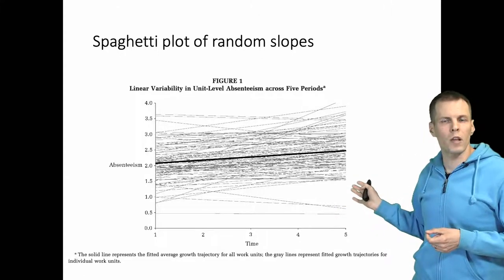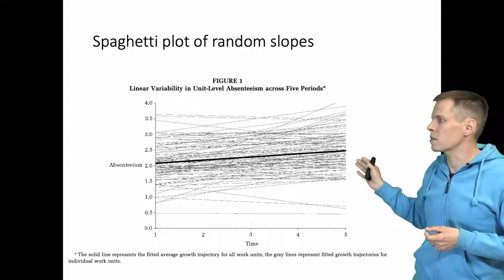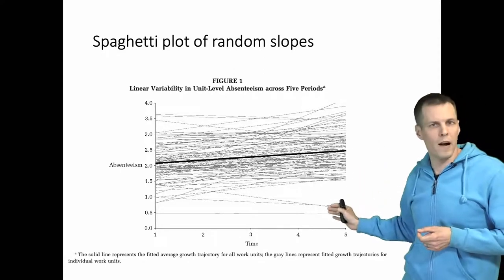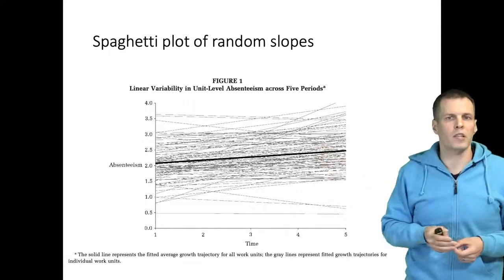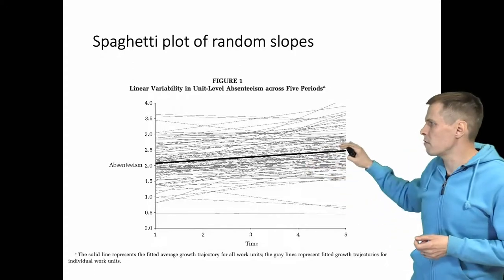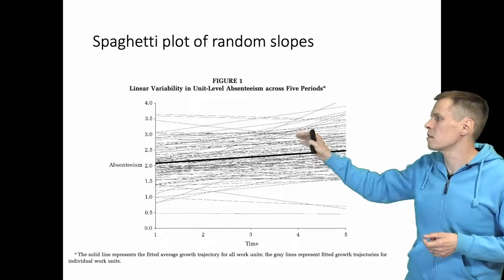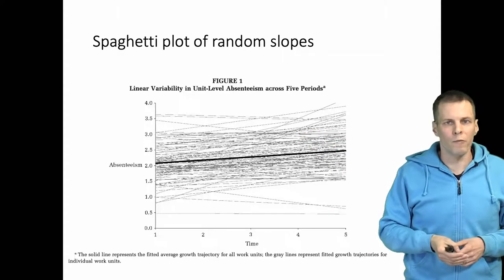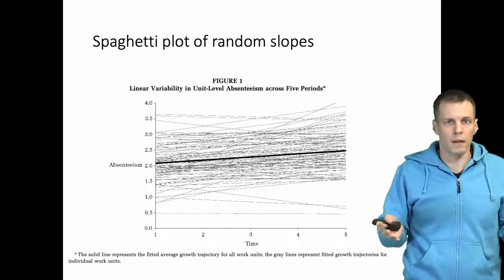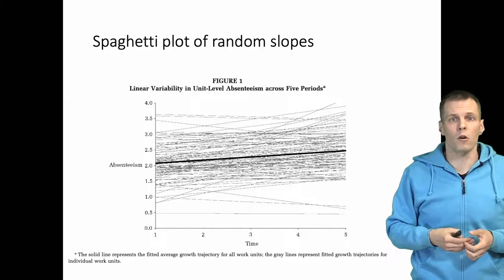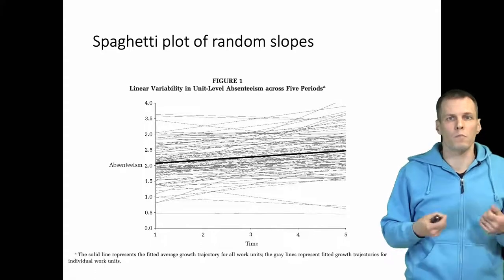We can see that all the lines go roughly in the same direction, but there is some variation and extremes. Generally they all trend in the same direction. There is some difference but nothing really extreme, and that's expected because the variance of those slopes were rather small.